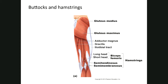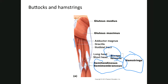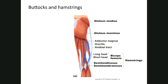From the gluteus maximus it comes down into the iliotibial tract. On the medial aspect we have gracilis, and the hamstring muscles consist of biceps femoris, semimembranosus, and semitendinosus. The biceps femoris is the most lateral and largest of the hamstrings. Semimembranosus is on the medial side — 'membranosus' is more medial — and semitendinosus is closer to biceps femoris.